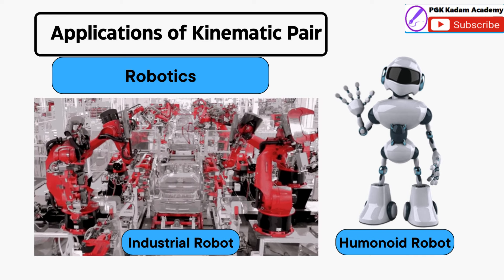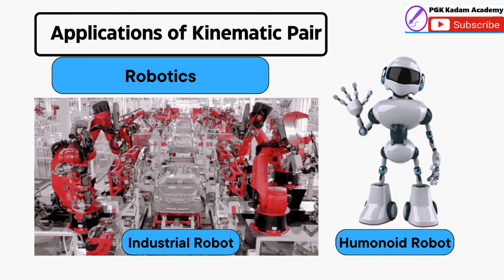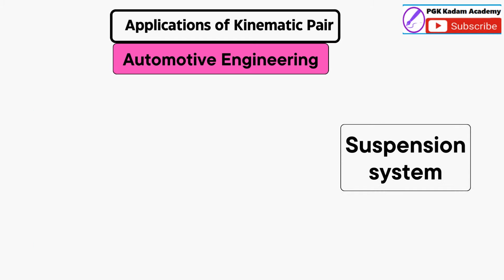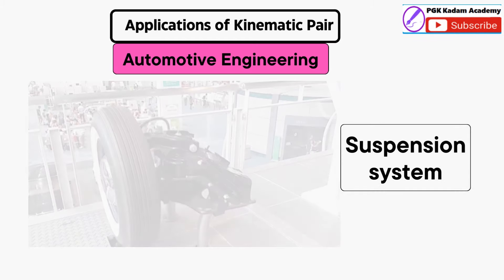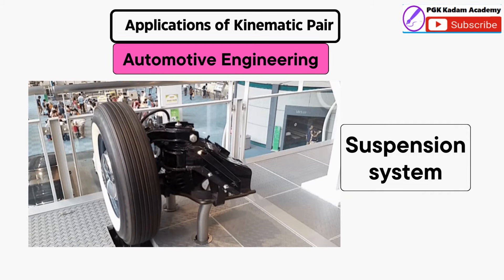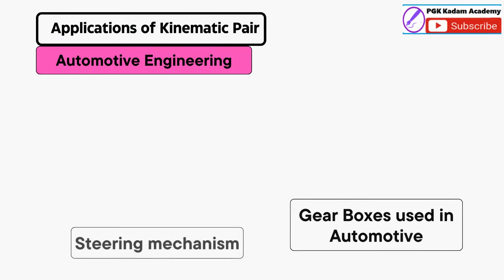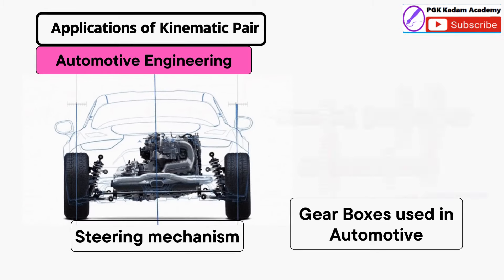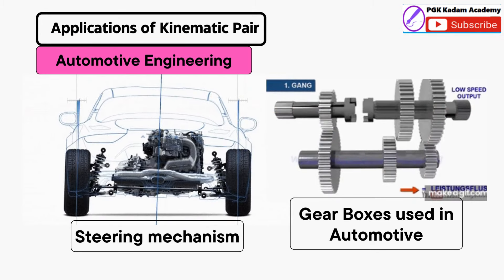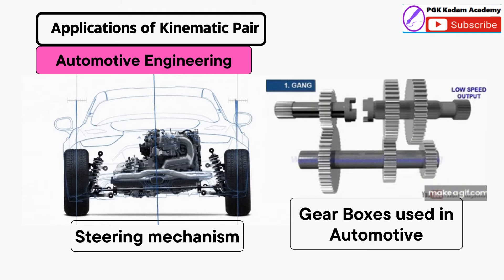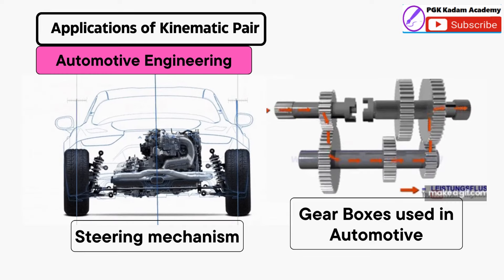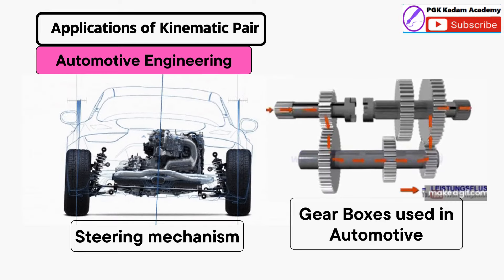Allowing robots to perform tasks such as pick-and-place operations, assembly, and welding. In Automotive Engineering, Kinematic Pairs play a crucial role in the design of suspension systems, steering mechanisms, and gearboxes in automobiles. These pairs ensure smooth and controlled motion of vehicle components, enabling stable and efficient operation.